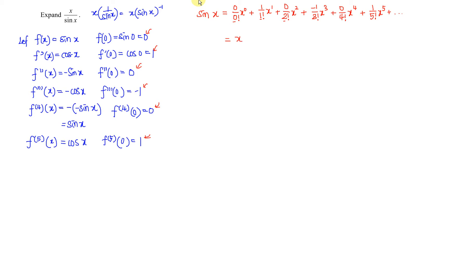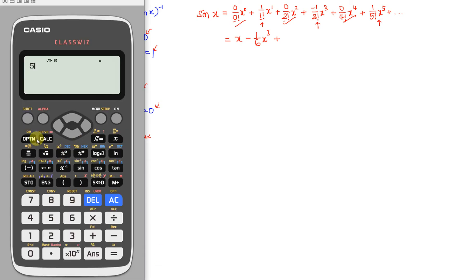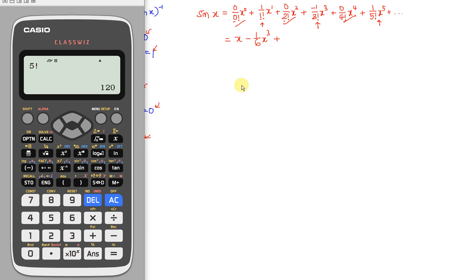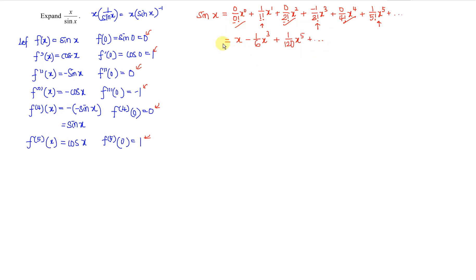Simplifying, the zero terms vanish and we obtain: sin x equals x minus 1 over 3 factorial times x cubed plus 1 over 5 factorial times x to the power of 5 and so on, which is x minus 1 over 6 times x cubed plus 1 over 120 times x to the power of 5 and so on.